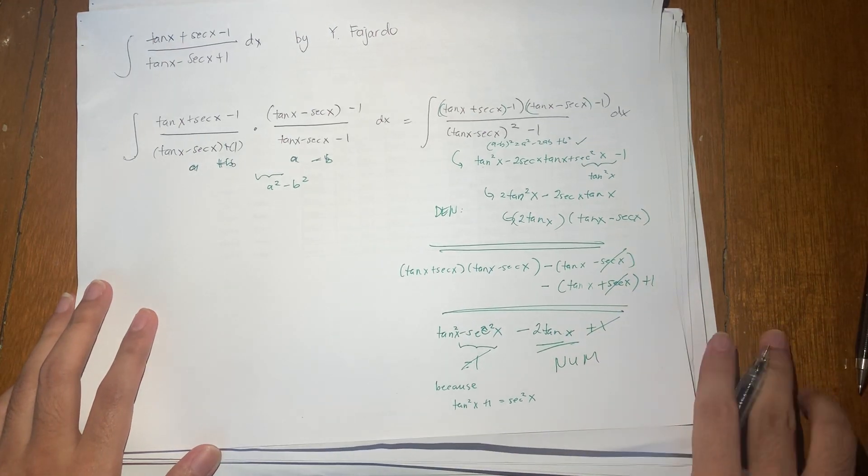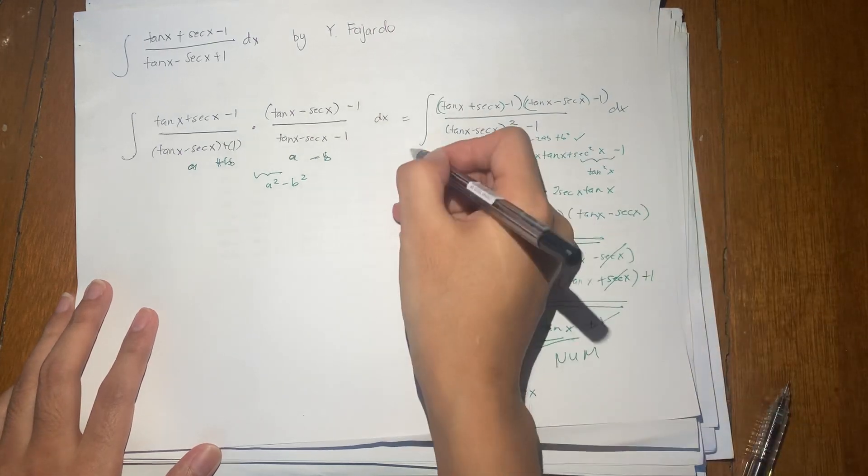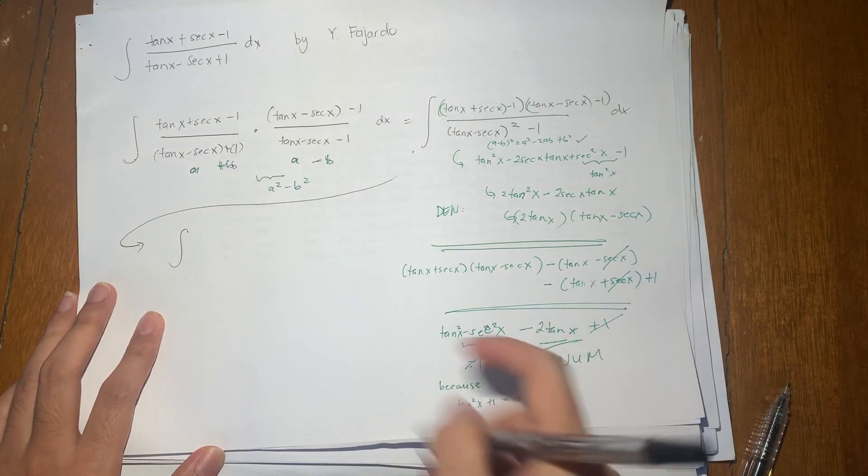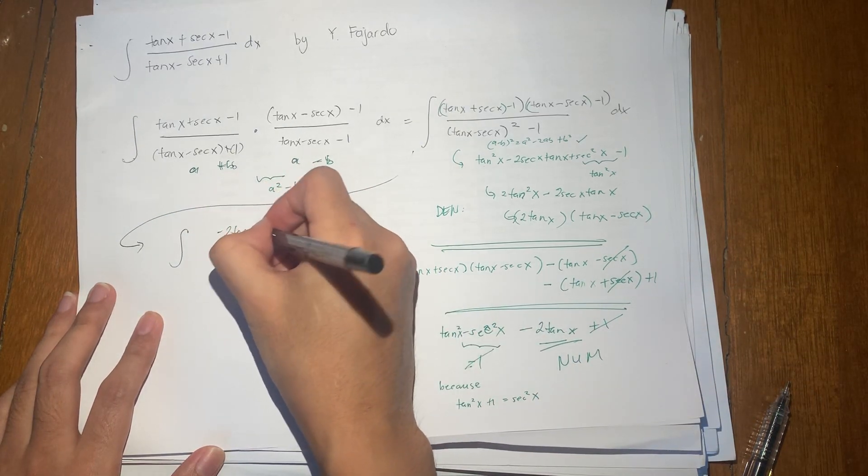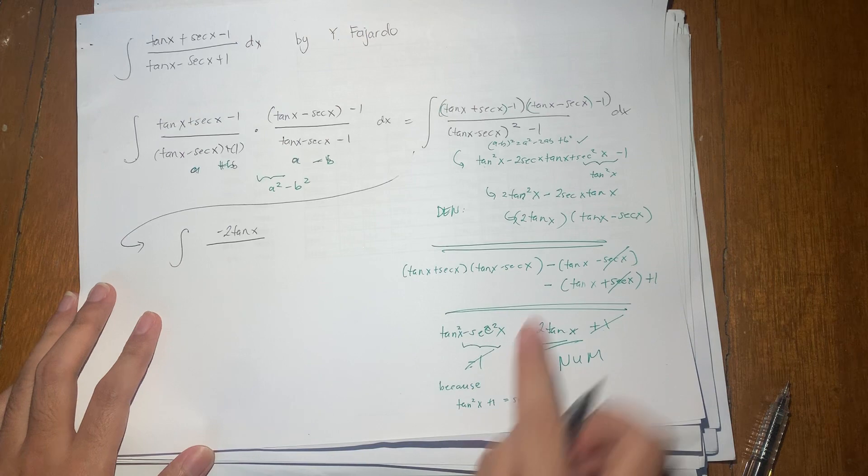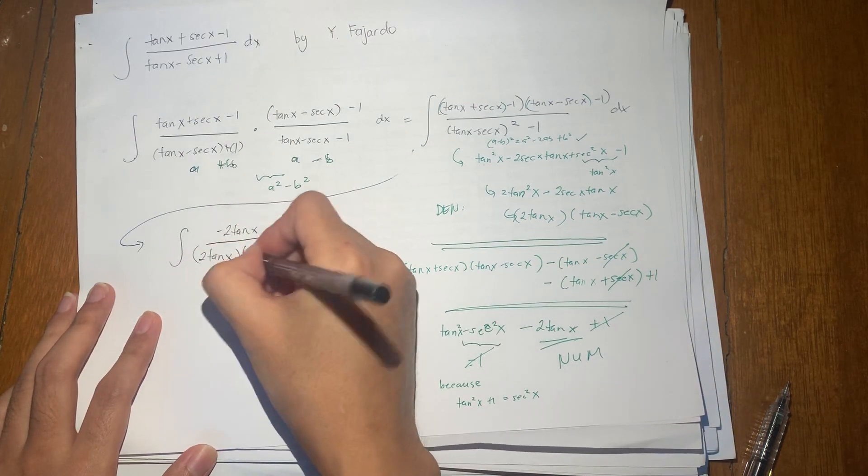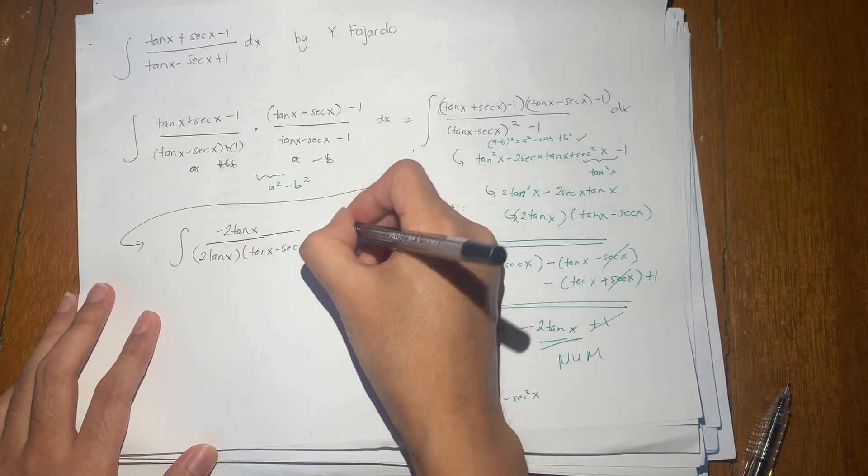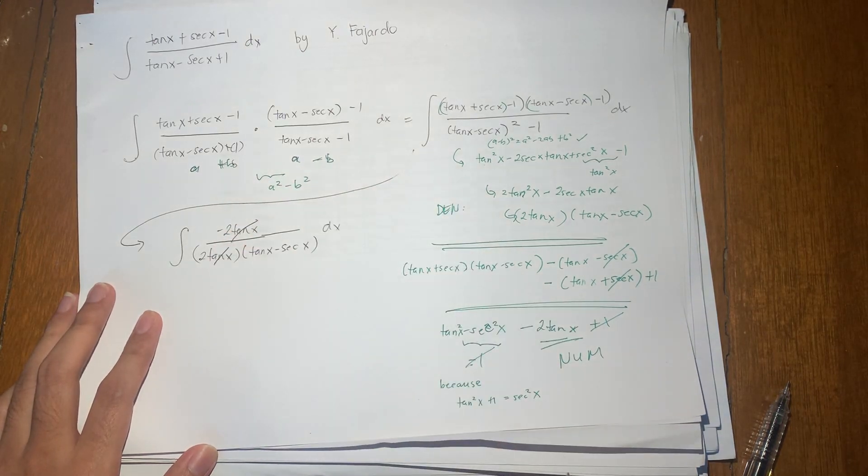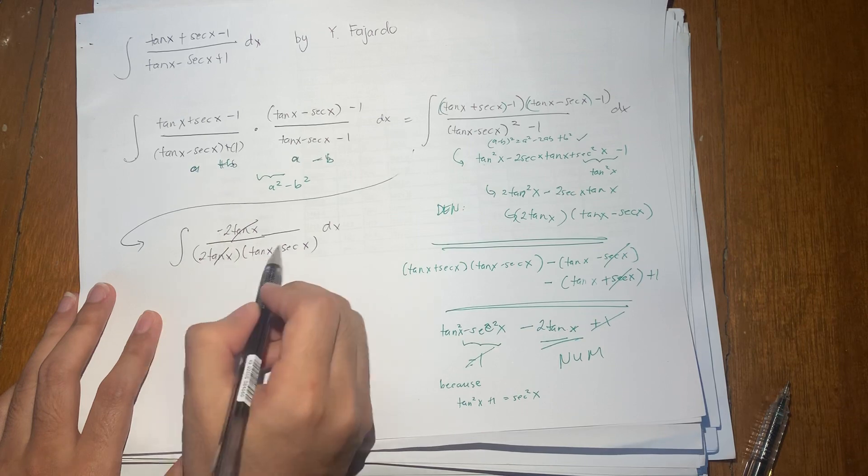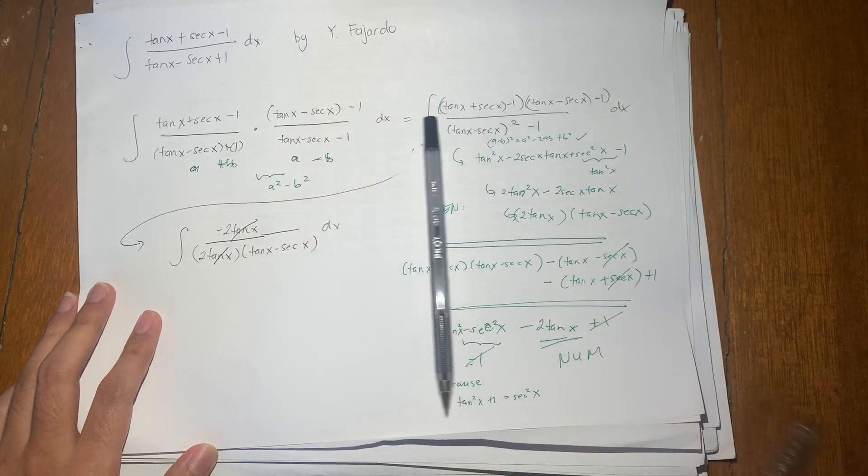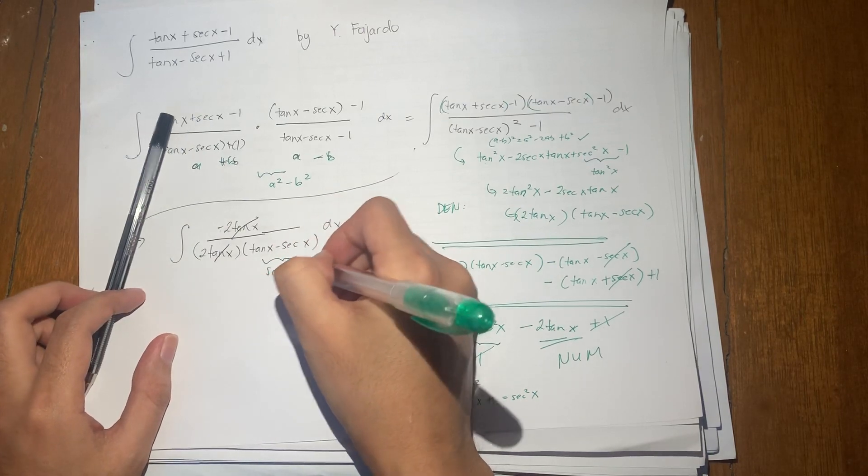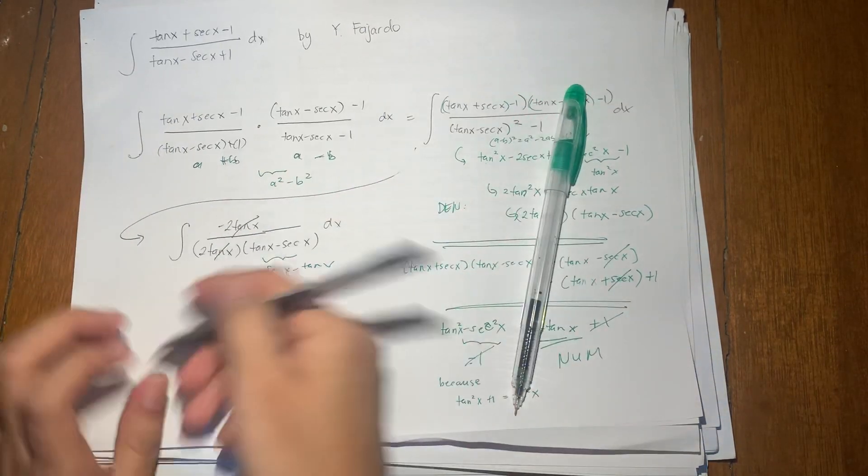Okay. So now the entire expression, this one, becomes the integral of numerator is negative 2 tangent x over 2 tangent x times tangent x minus secant x dx. Of course, this cancels out. And then I'll just distribute the negative so that it becomes secant x minus tangent x. And the 2 cancels out as well, of course.